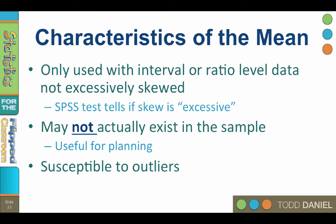Skewed distributions can also create a misleading mean. For example, the median income in the United States is $42,000 — half of Americans make $42,000 a year or less — but the mean income is $60,000, nearly half again higher. The mean income data are skewed by a relatively small number of millionaires and billionaires whose excessive wealth shifts income figures upward, making the mean non-representative of the typical American. However, when outliers are not extreme or are balanced on both ends of the distribution, the mean is still relatively stable and can be used for analysis.